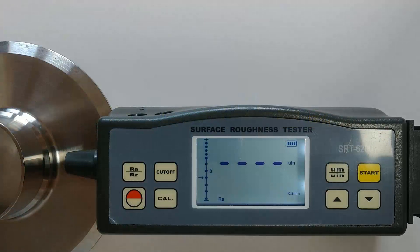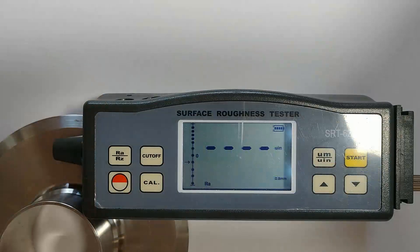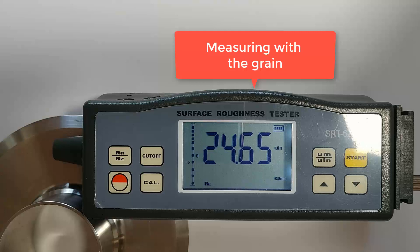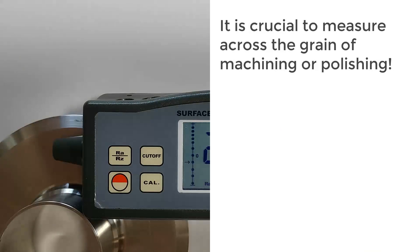To demonstrate the difference in the measurement direction, we're going to measure the same piece of stainless steel across the grain and then I'll measure it with the grain. When I measure it across the grain, this particular area gives me a roughness average of 47 micro-inches. But when I measure the same piece of stainless steel in the direction of the machine tool marks, the reading that I get is very different than when I measure across the grain. It's roughly half of the RA surface finish that I got measuring across the grain. So it is very crucial to measure across the grain and not with the grain of either the machining or the polishing.